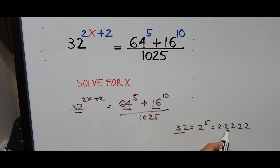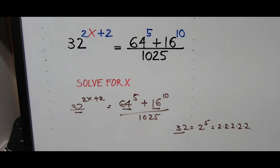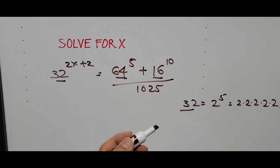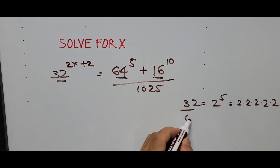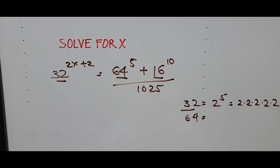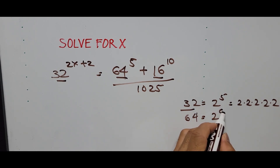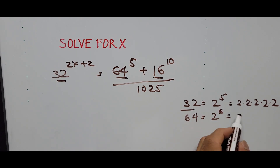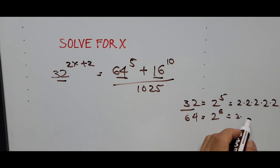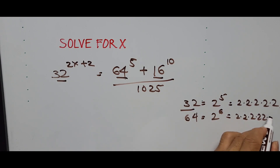So 2 times 2 is 4, times 2 is 8, times 2 is 16, times 2 is 32 — so that's 5 times. And 64 will be written the same way as 2 to the sixth power — that's 2 multiplied by itself 6 times.